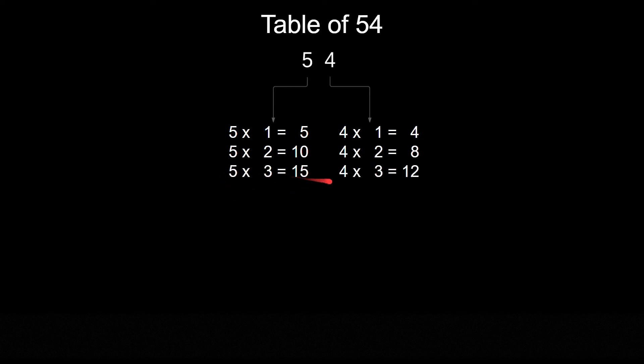5 threes are 15 and 4 threes are 12. 5 fours are 20 and 4 fours are 16. 5 fives are 25 and 4 fives are 20. 5 sixes are 30 and 4 sixes are 24.